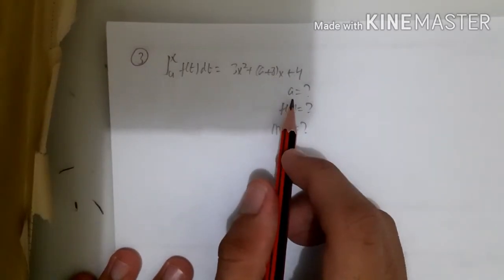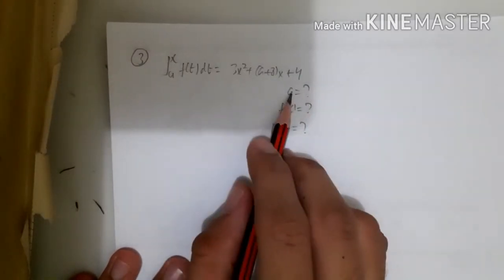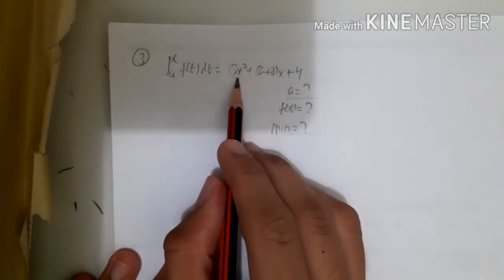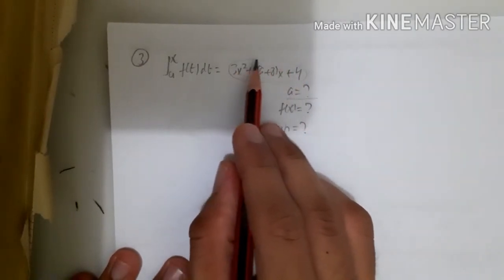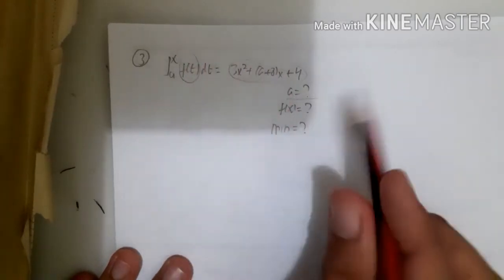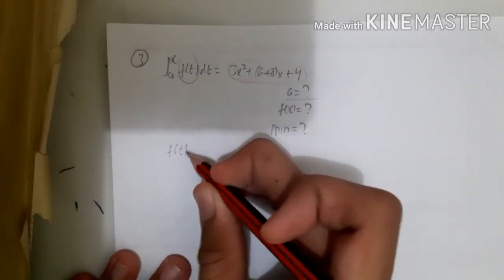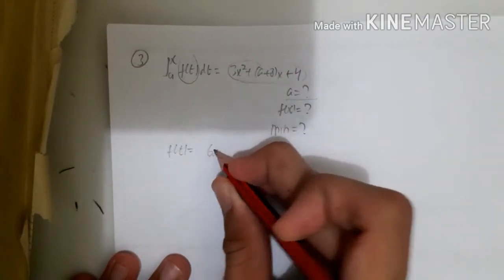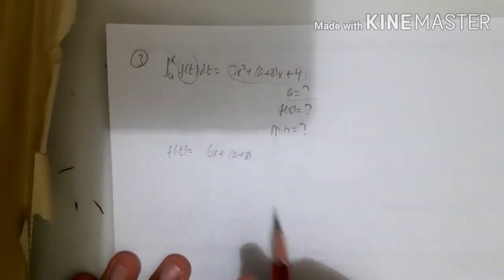First is finding the value of a. To find this a value, you can see that the first derivative of this integral is actually f(t). So we could find f(t) just by taking the first derivative, which is 6x + a + 8.